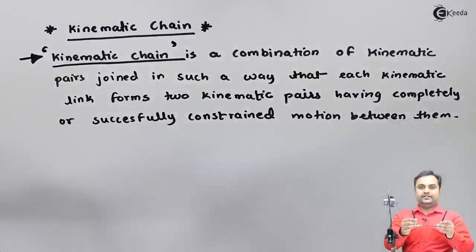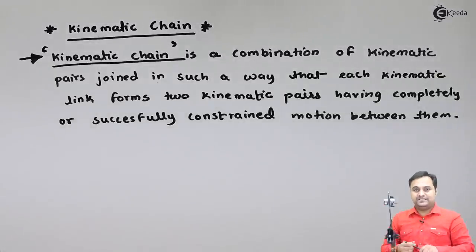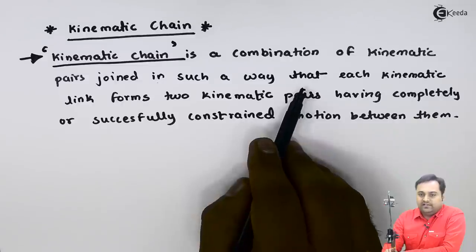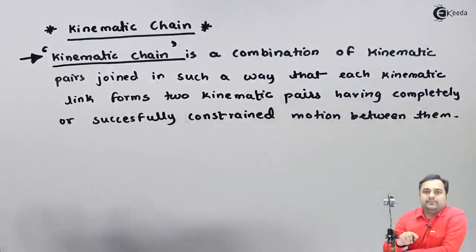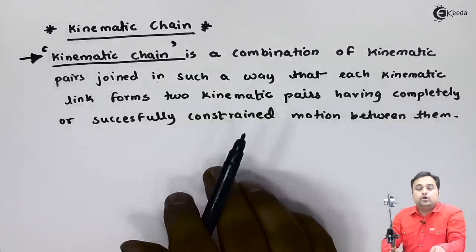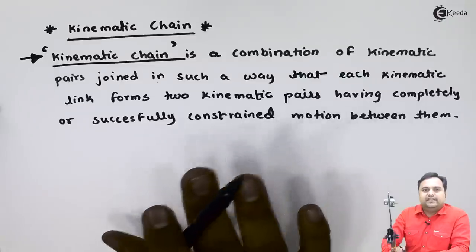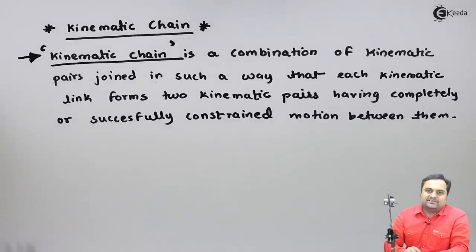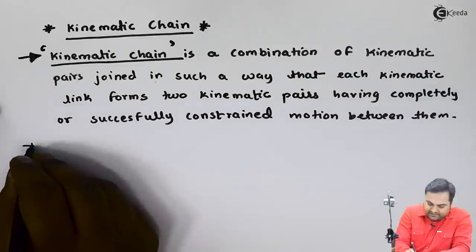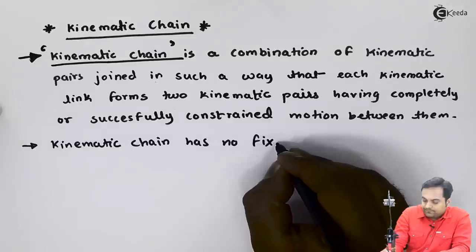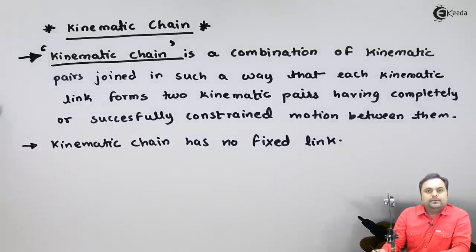These two black pens would in turn be connected with other links, so this goes on multiplying. A kinematic chain is a combination of kinematic pairs joined in such a way that each kinematic link forms two kinematic pairs, with completely or successfully constrained motion — meaning the motion should be only in one direction: either rotation or translation, not both.